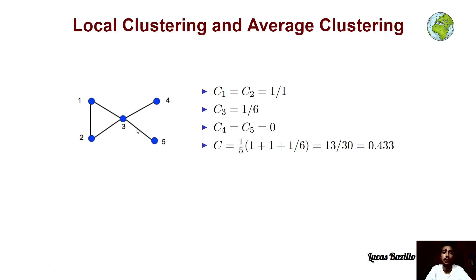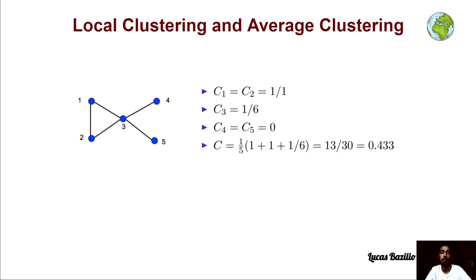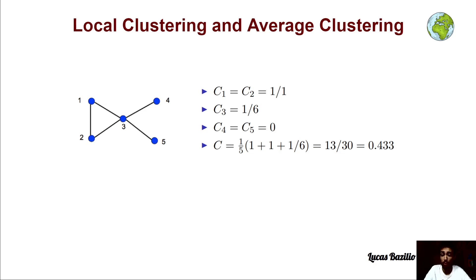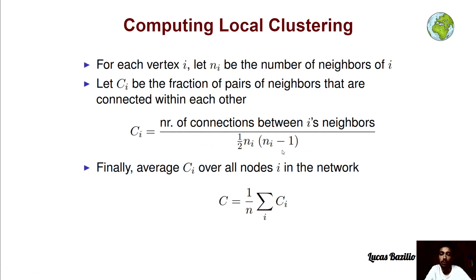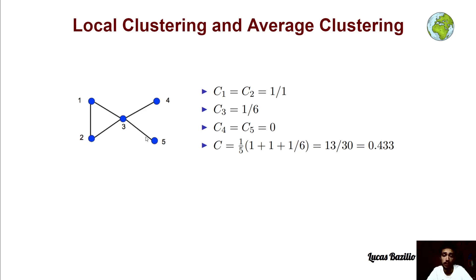For nodes 4 and 5, node 4 has only one neighbor, which is node 3. The number of connections between the neighbors of node 4 is 0, since there is no cycle — no edge from node 3 back to itself. Since the numerator is 0, the local clustering is defined as 0. The same applies to node 5.